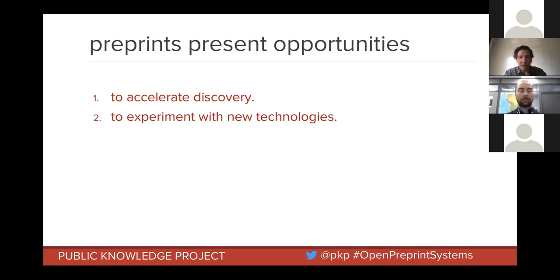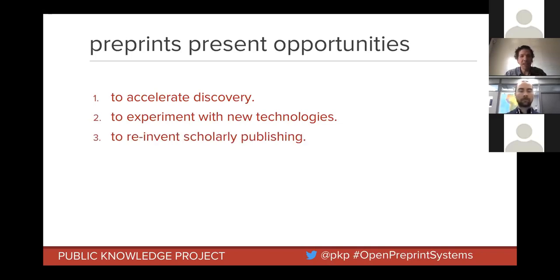Preprints also give us an opportunity as a community to experiment with new technologies — things like web-based authoring, web-based workflows, document-centric workflows, publishing straight to HTML and converting to XML. By not being wedded to legacy publishing systems, preprint servers allow us to think about what the right technologies should be. Third, preprints give us a chance to reinvent scholarly publishing — supporting a preprint culture opens opportunities to explore different models of evaluation like open review, and to ask what we would really want to see in scholarly dissemination.